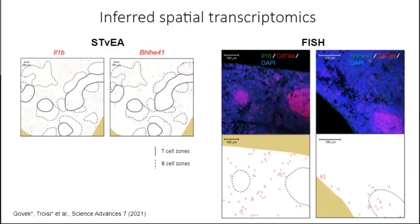We can not only look at cell populations in the CODEX images, but also infer spatial patterns of gene expression, because we are not only transferring cell population labels but also the gene expression profile. Here we have two examples of the predicted spatial distribution of gene expression for two genes — IL1B and BHLHE41 — along with validation using single-molecule FISH confirming the predictions of STEVIA.